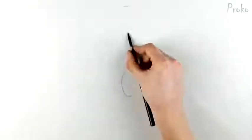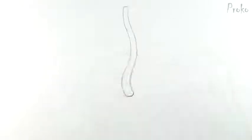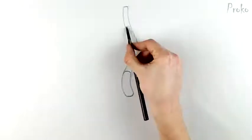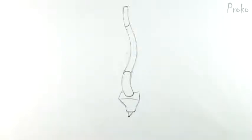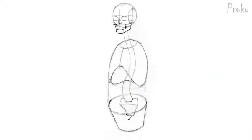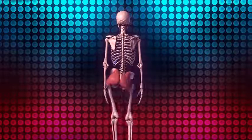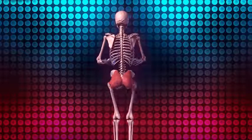We're going to start our study of the skeleton with the spine. The spine is the connection between the three major masses: the head, the ribcage, and pelvis. And it's wedged between two butt cheeks. When constructing the figure, it's common to start with these three masses before adding the limbs.